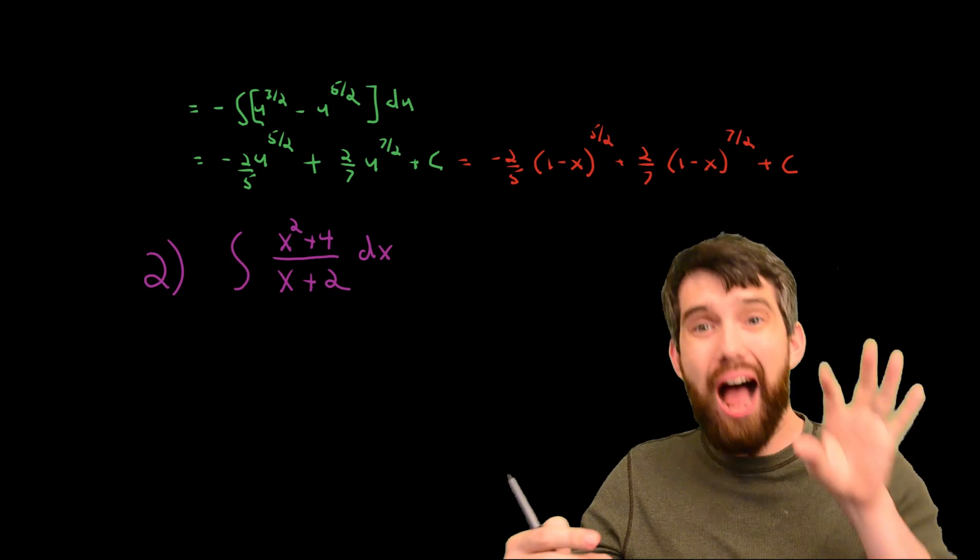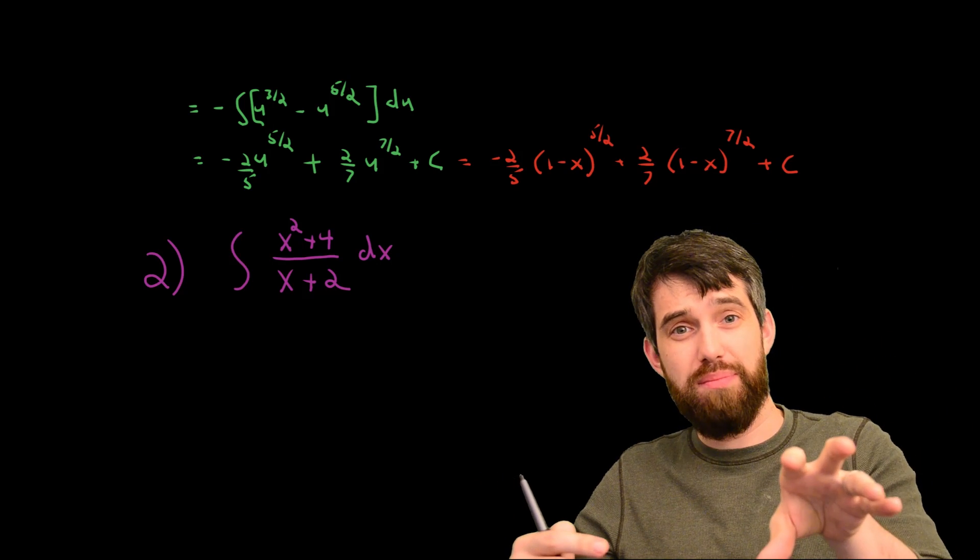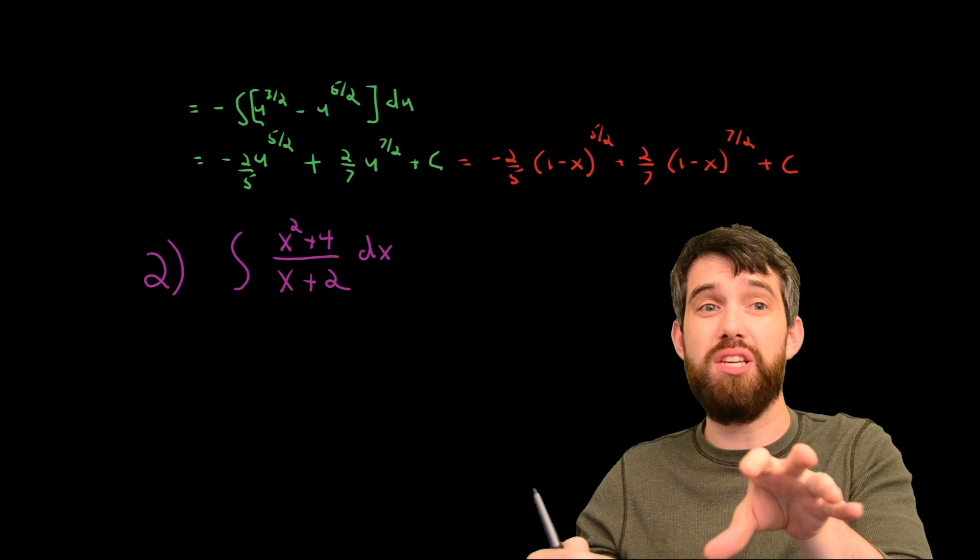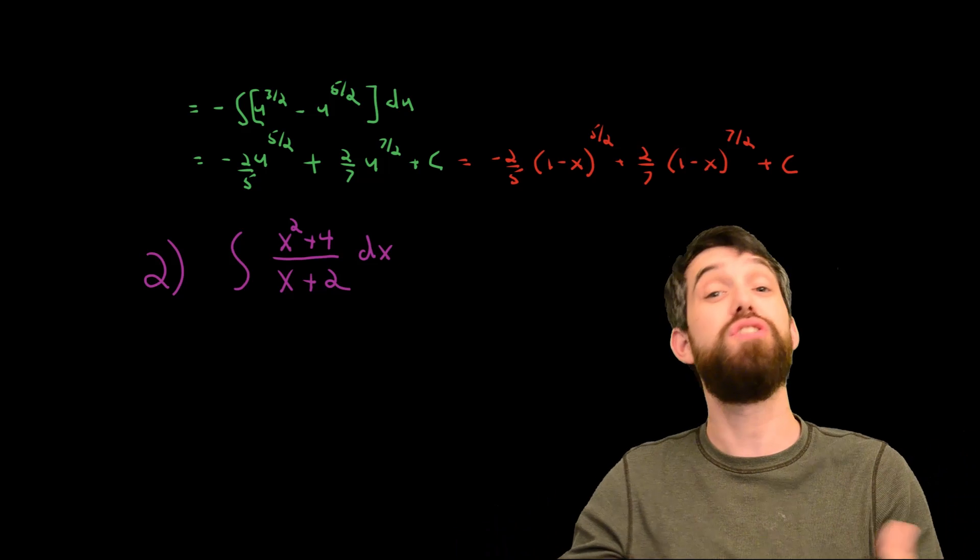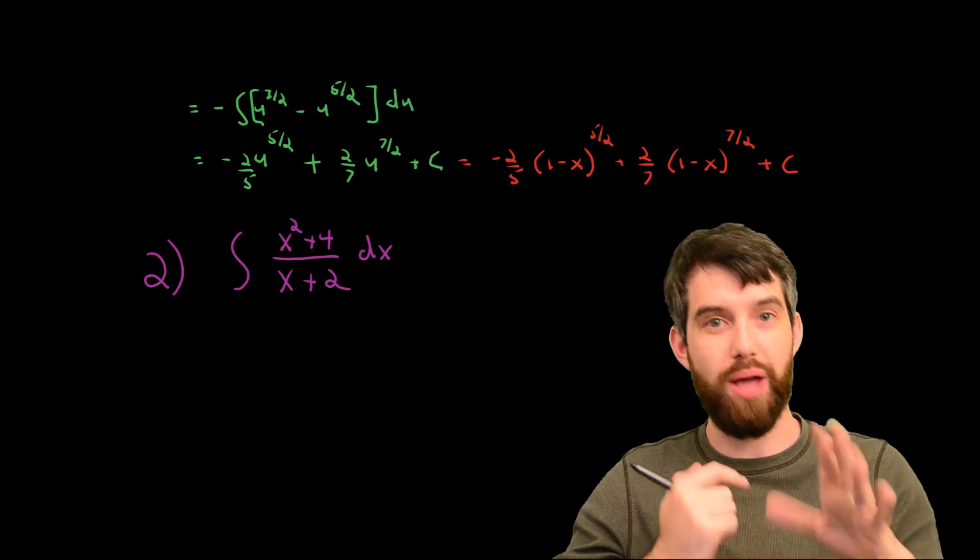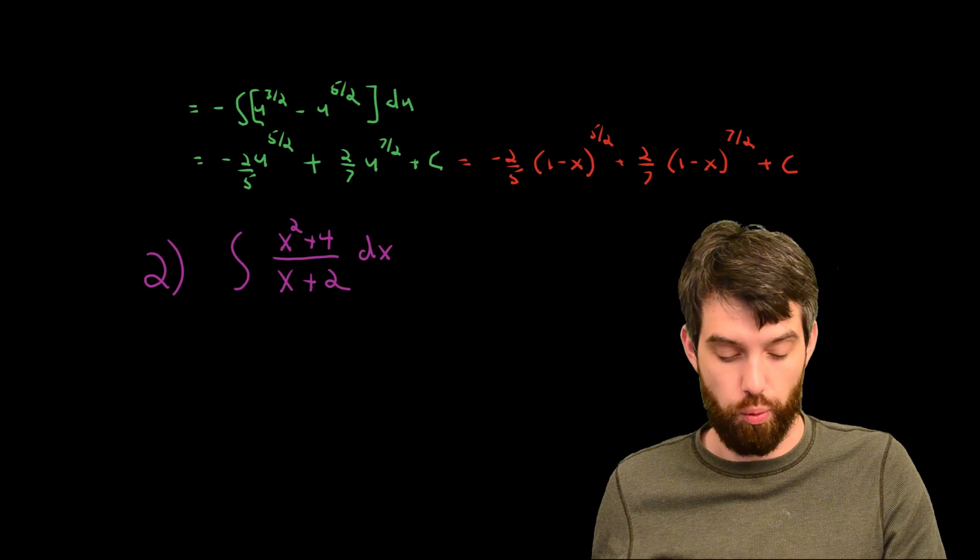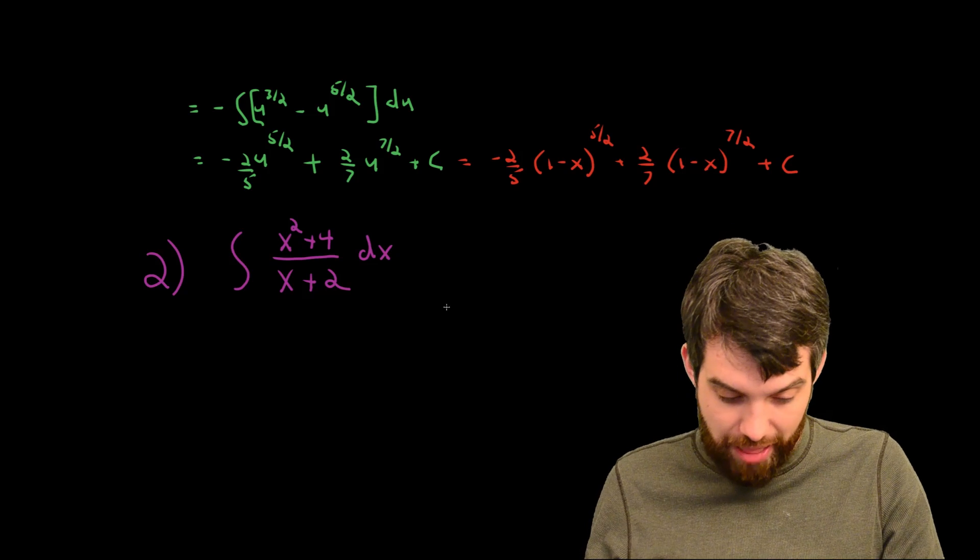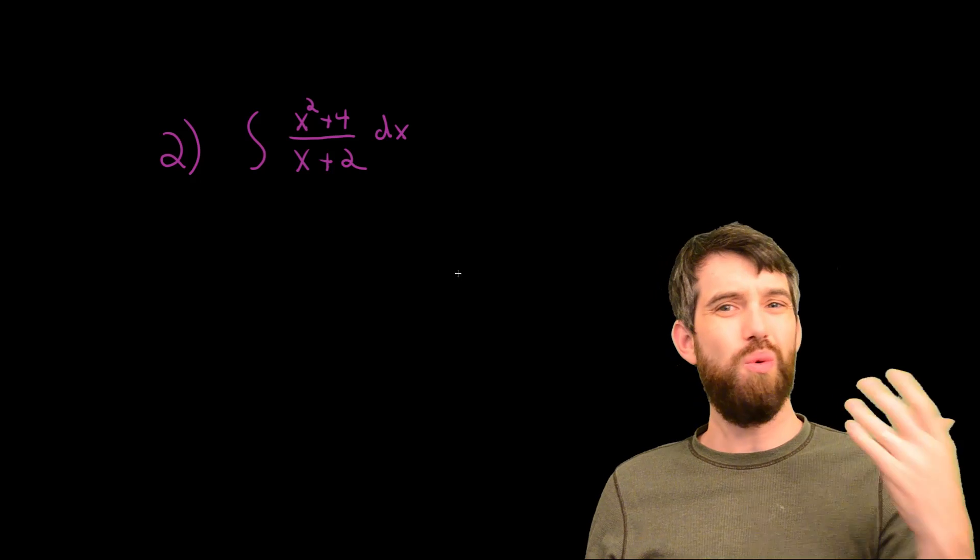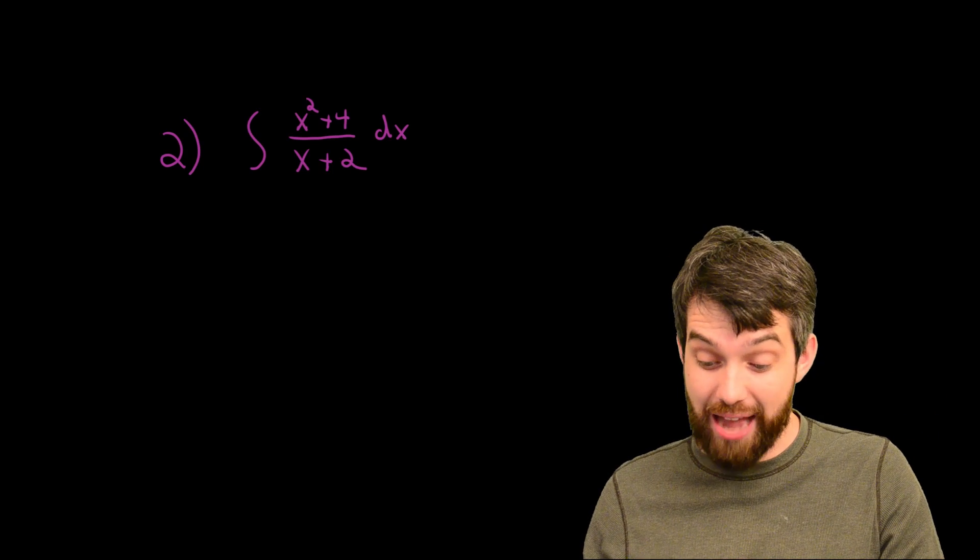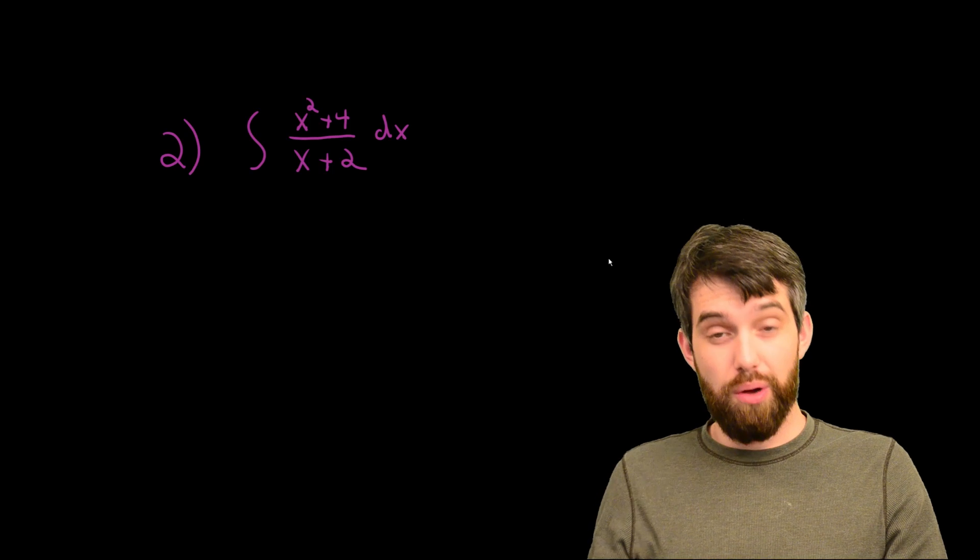So what we really had in this example was one where we had to do this back substitution, as we call it, where there were other parts of the integrand that didn't work out nicely in the du, but you could use the formula for u to manipulate these other parts. Let's see one more example of how this can work out. I'm going to look at this example number two here. What's a good choice of u? We have to think about that first.